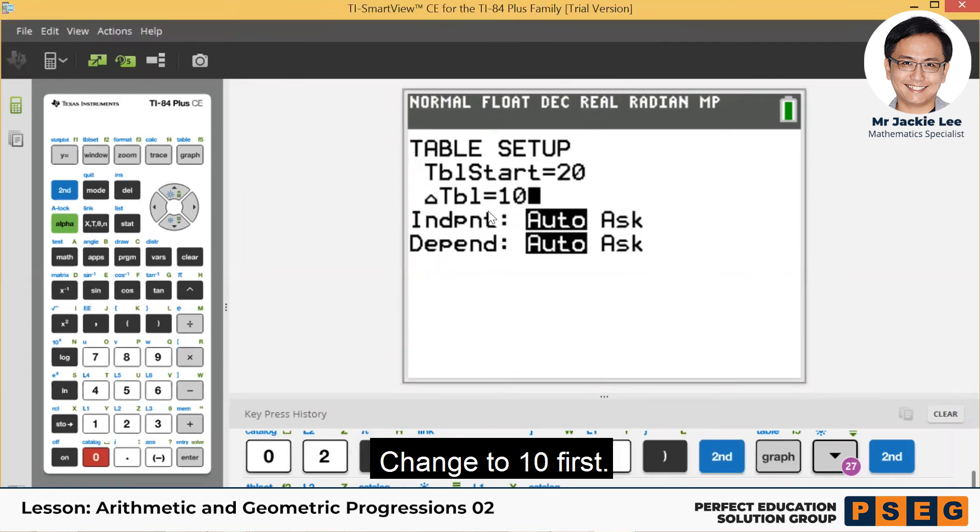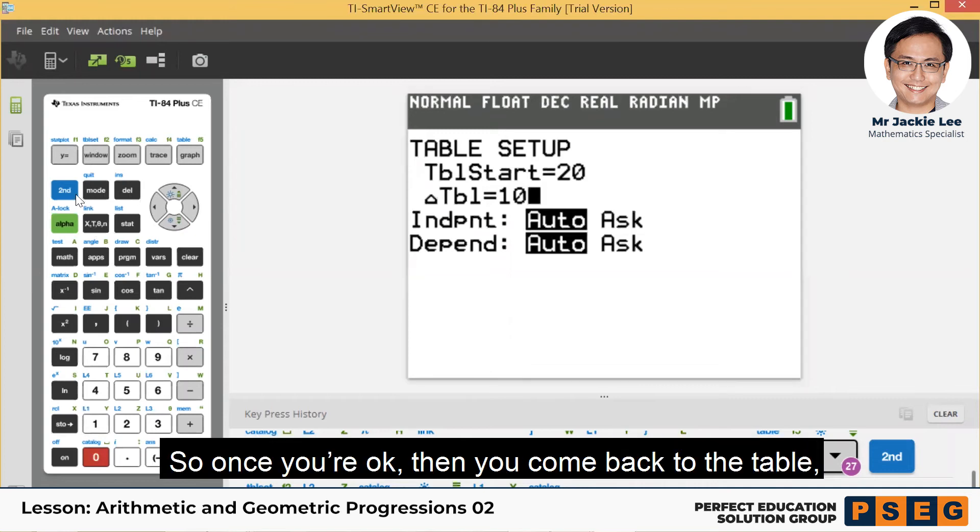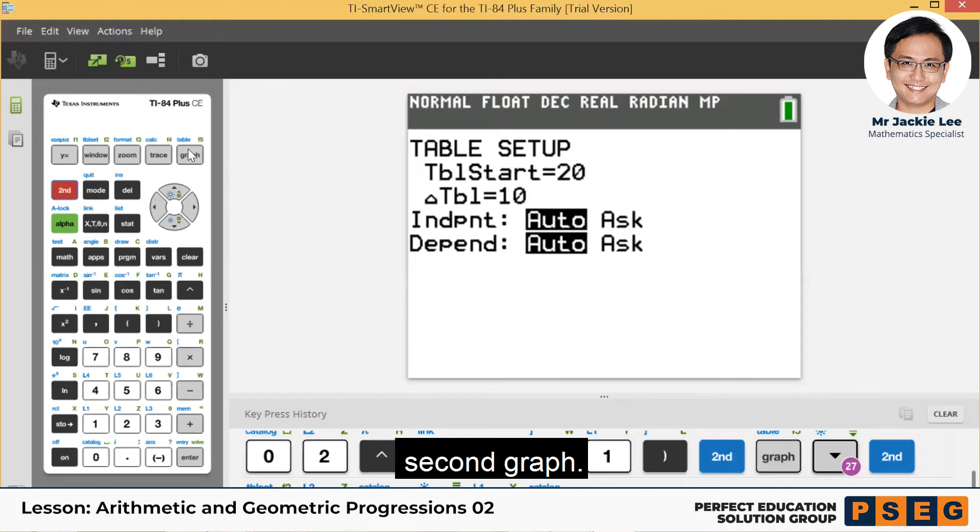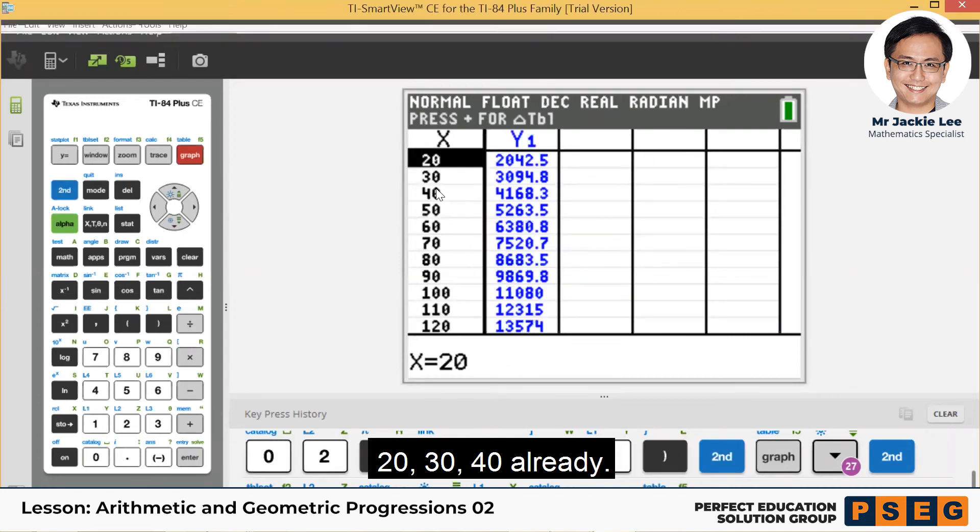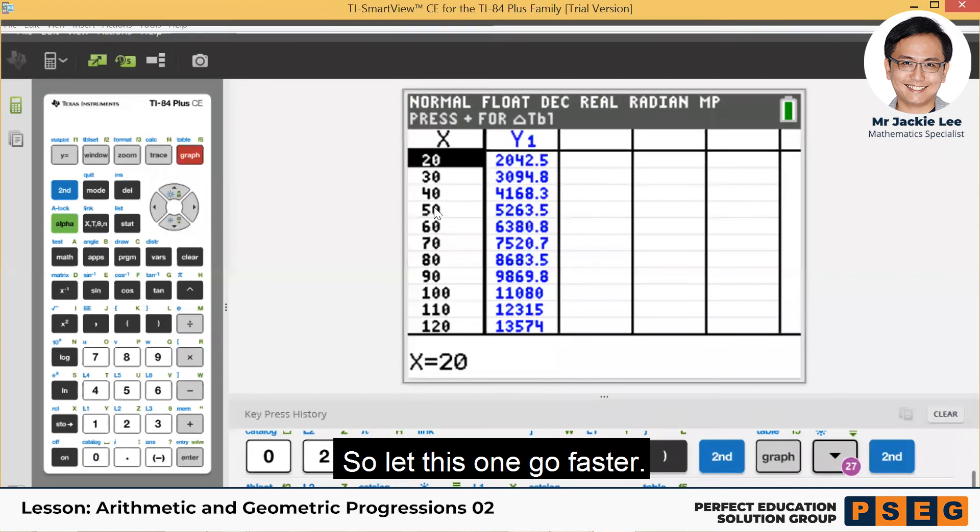So once you're okay, then you come back to the table, second graph. Can you see now, it's not 20, 21, 22 already. 20, 30, 40 already. So let this one go faster.